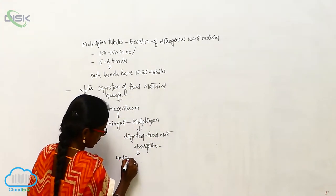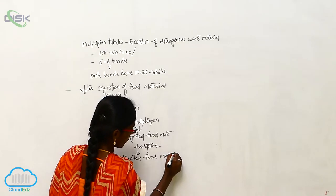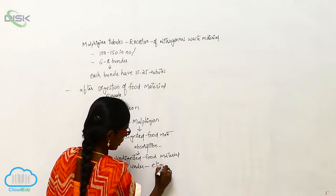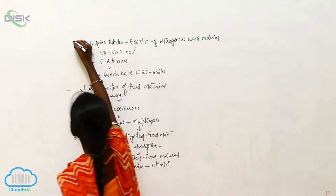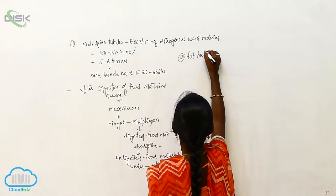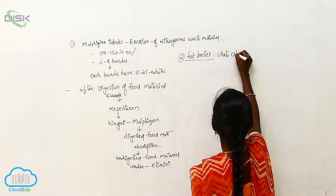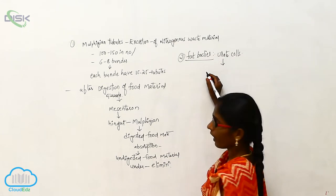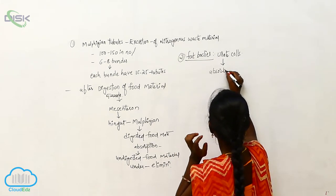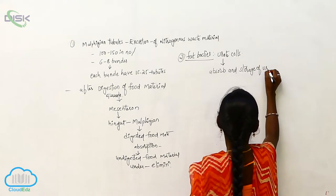After absorption, the undigested food material undergoes elimination. The next excretory structure is the fat bodies. The fat bodies secrete urate cells, and the urate cells absorb and store uric acid.